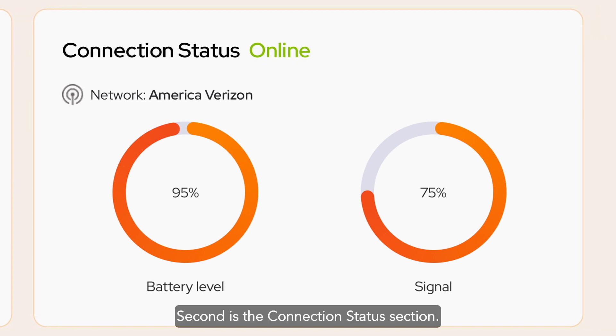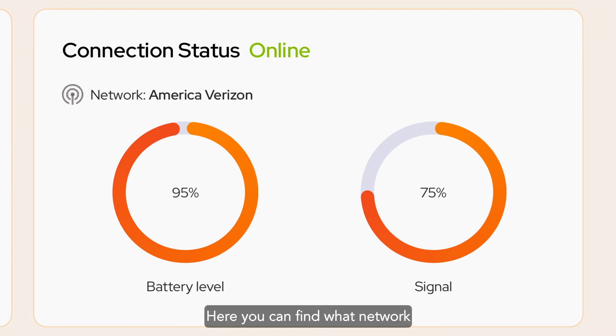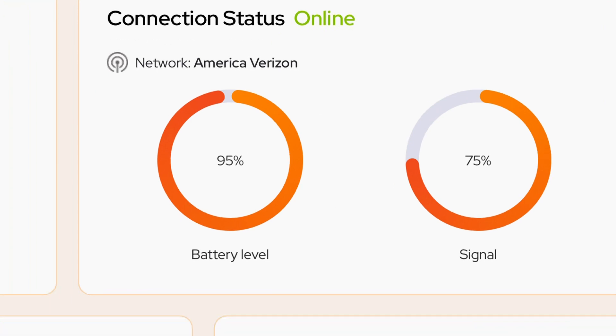Second is the Connection Status section. Here you can find what network your device is connected to, as well as the signal strength. This will give you a good idea of which network carrier works best in your area.